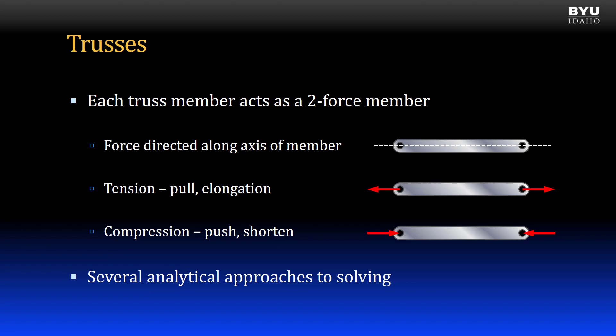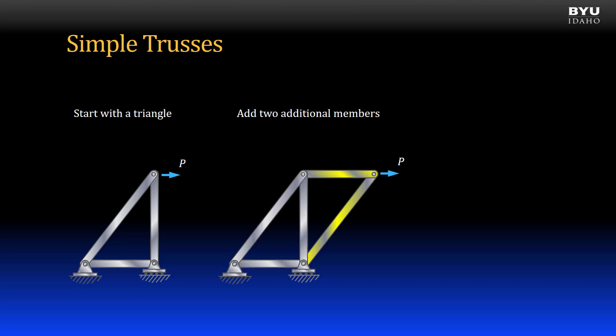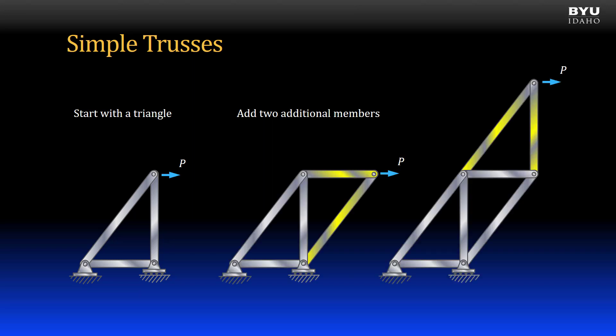There are several analytical approaches to analyzing member forces in trusses. We will look at two of them: the method of joints and the method of sections. In this class we will deal with simple trusses only. Simple trusses are formed by starting with a triangle shape, which is a very stable shape. Then two additional members are added to form another triangle, and two more to form another triangle, and so on.